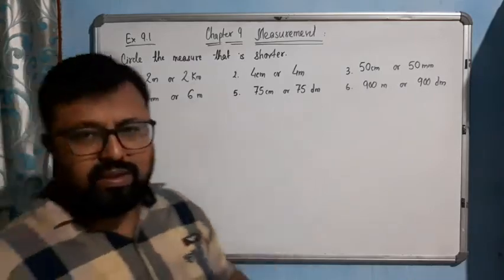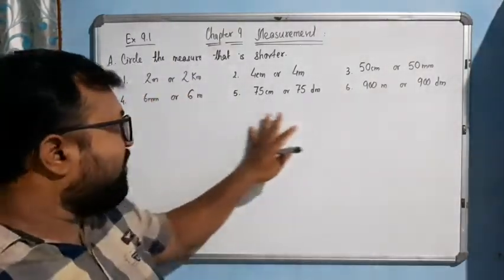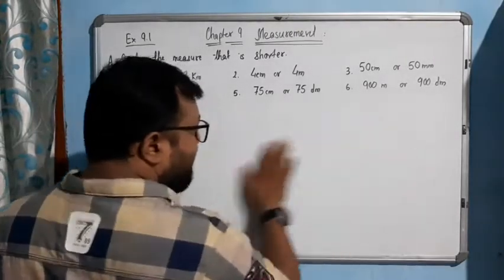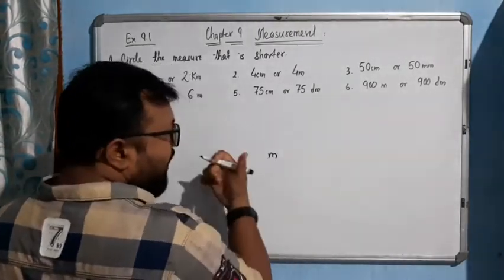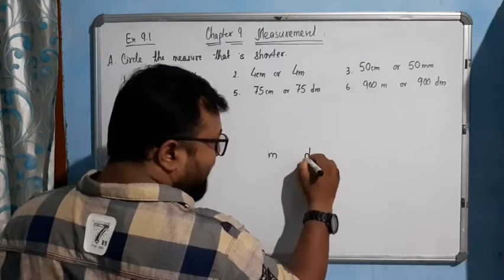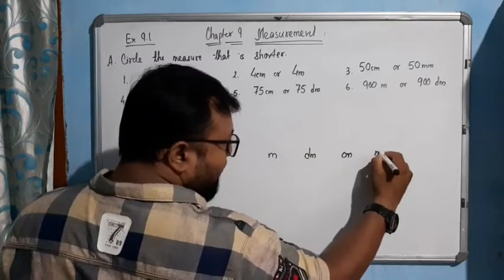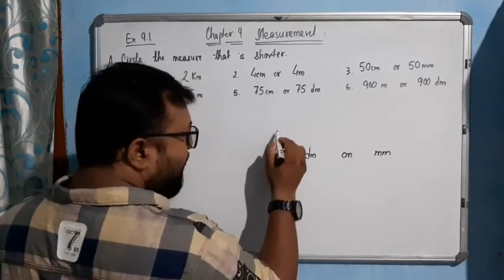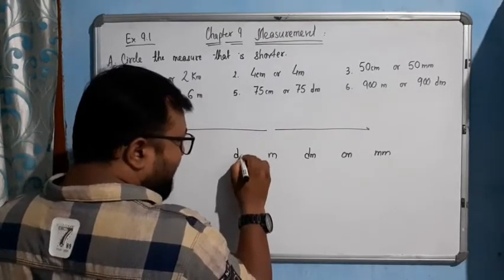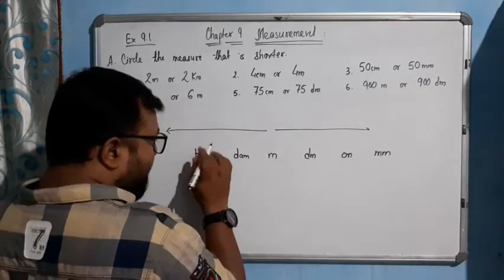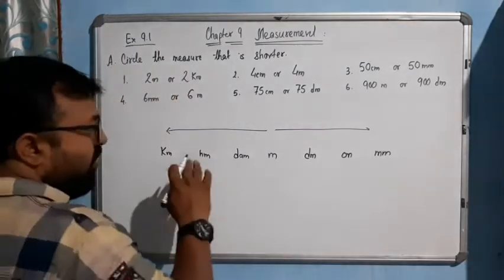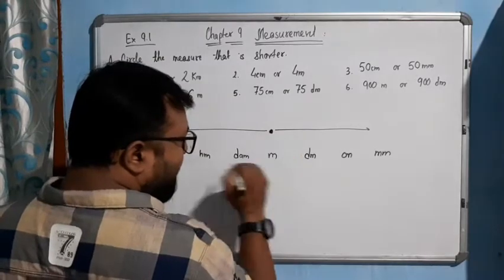Remember, if this type of question comes it may sometimes cause confusion. The standard unit is meter. If you move towards the right-hand direction the value decreases — you get decimeter, centimeter, and millimeter. If you move towards the left-hand direction the value increases — you get decameter, hectometer, and kilometer.